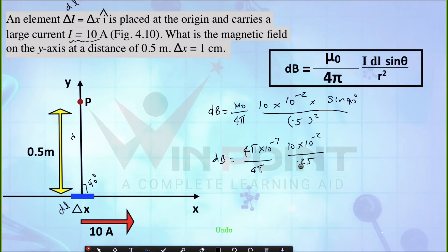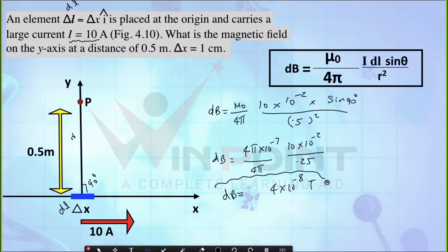Solving it, we get dB = 4 × 10⁻⁸ tesla. This is our answer. When you get such a question, draw the diagram first, then solve it step by step.